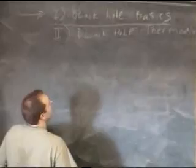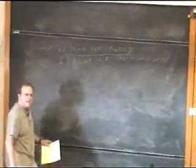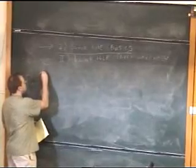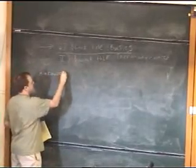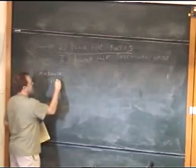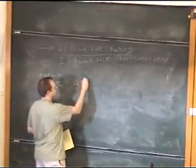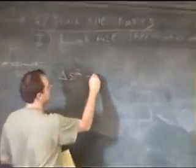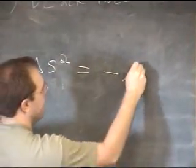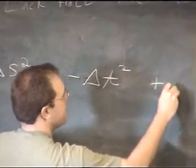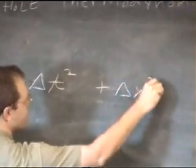So we begin. I'm not going to assume any general relativity, but obviously I have to assume something. So I'll assume that you're all familiar with Minkowski space, which has the property that if you compute a proper distance squared in Minkowski space, it's given by — in Cartesian coordinates — minus the change in time squared, plus the change in distance squared.